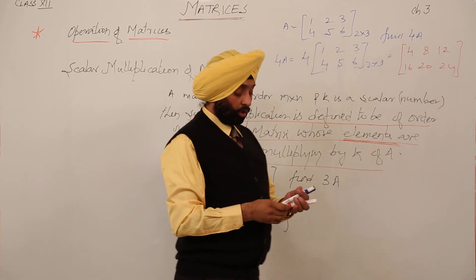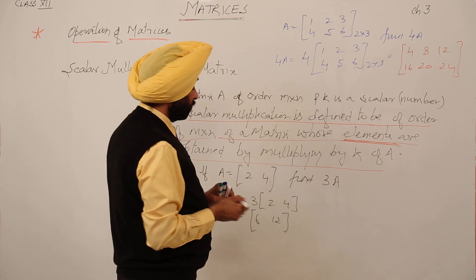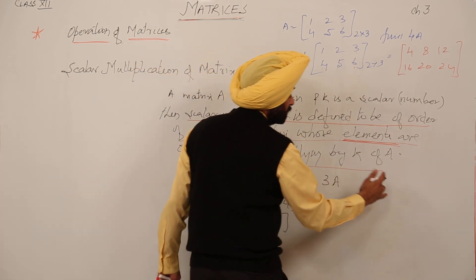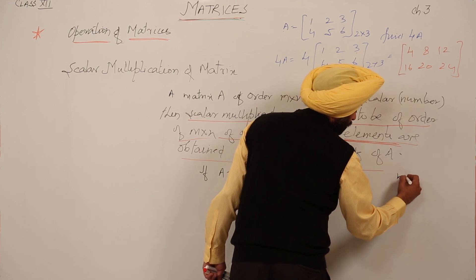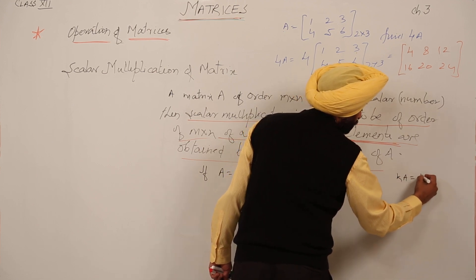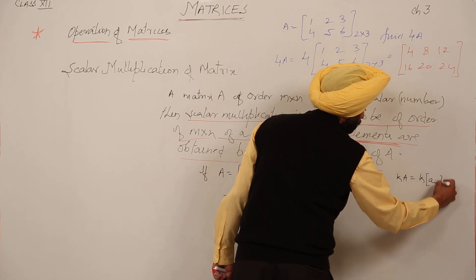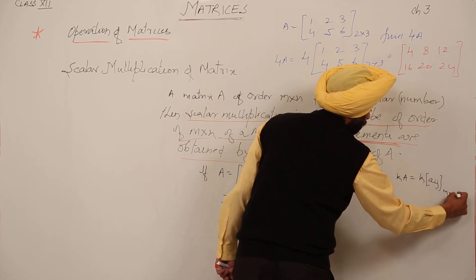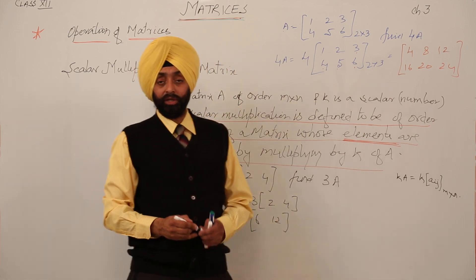After scalar multiplication, we will proceed with the properties. The scalar multiplication can also be written formally as: kA = k · a_ij, of order m×n. It can be written this way as well.